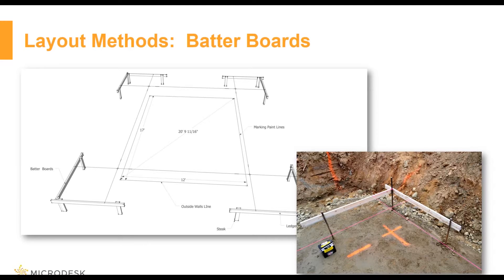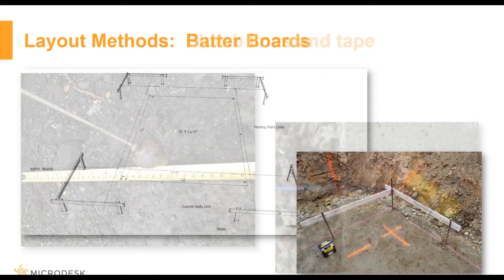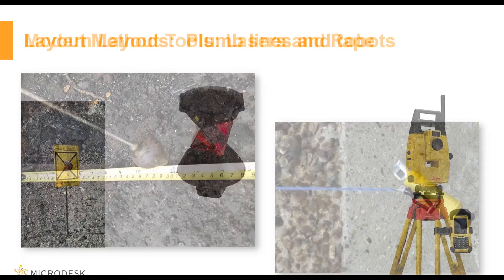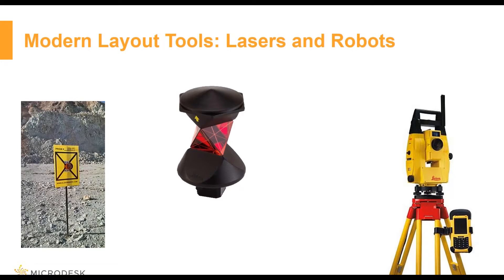In terms of what's currently in use — more so in residential or small-scale construction — we see a lot of people using layout methods like batter boards. They're going out there, staking out, taking regular measurements. It's not a bad method; it can be very accurate if you put a lot of effort into it. But it's not always the fastest, and coordinating changes isn't always easy. Similarly, plumb lines and tape are not always the easiest when working in a place with a lot of wind or bad weather.